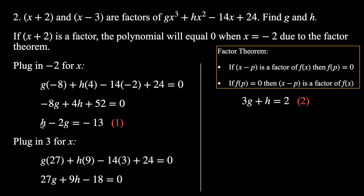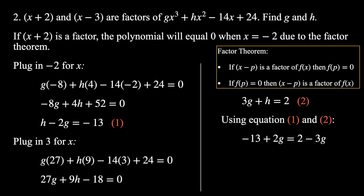The most straightforward method is to rearrange both equations in terms of h. Equation 1 gives h = −13 + 2g, and equation 2 gives h = 2 − 3g. Using substitution: −13 + 2g = 2 − 3g. Adding 3g and 13 to both sides: 5g = 15, so g = 3. Substituting into equation 2: 9 + h = 2, so h = −7. That's how we use the factor theorem to find missing coefficients.